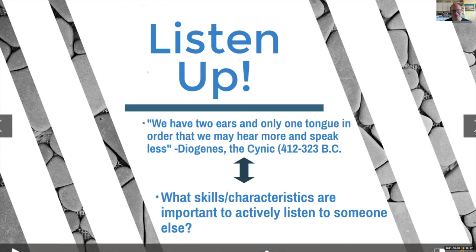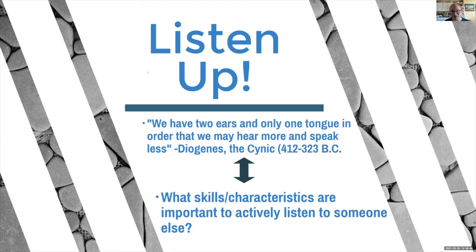This quote is important given who it's from: Diogenes, known as one of the greatest speakers in ancient Greece, the Cynic, famous for his oratory, said: 'We have two ears and only one tongue in order that we may hear more and speak less.' One of the greatest public speakers of his time said: in order to speak effectively, we have to listen. If we want people to understand what we're saying, we have to understand them first.